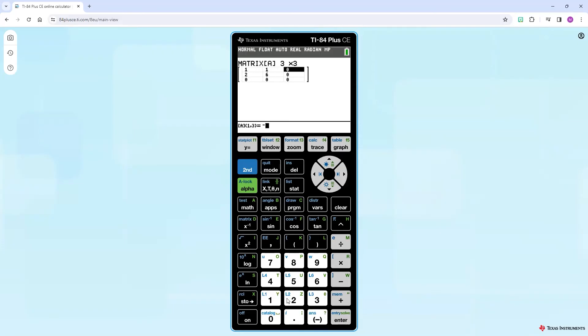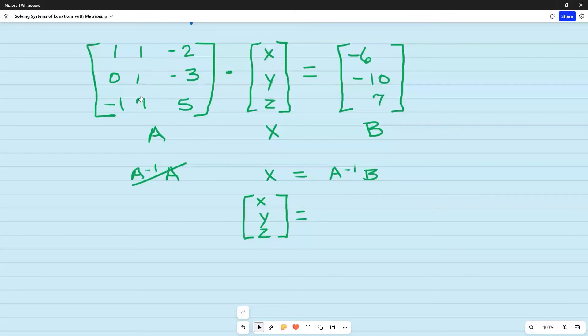1, 1, negative 2. And then I have 0, 1, negative 3, negative 1, 7, and 5. So every time I entered a number, I press the enter button. To exit out of here, I go back to second matrix and now go back over to edit. This time I want to go to number 2 because I want to enter in B. So B was a 3 by 1. And those numbers were negative 6, negative 10, and positive 7. So I'm going to go ahead and quit. And let's just go back so you'll see what I'm talking about. So this was A. This was the 3 by 3 that I entered in. And then this was B, which was the 3 by 1 that I entered in.